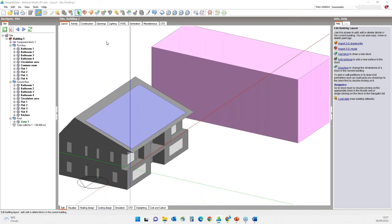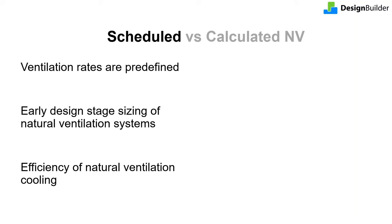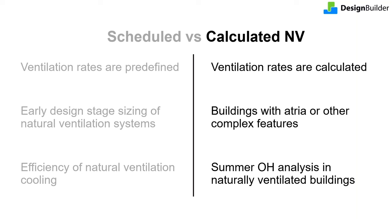There are two general approaches to natural ventilation and infiltration modelling in DesignBuilder, depending on the option selected under the natural ventilation and infiltration header in model options. Schedule is the default option — here we set the airflow in air changes per hour and set a schedule to adjust it. It is useful for early stage sizing and assessing natural pre-cooling efficiency. When the calculated option is selected, you define the openings, controls and weather details, and EnergyPlus calculates the airflow using wind and buoyancy driven pressures, opening sizes, operation, and fabric infiltration details.